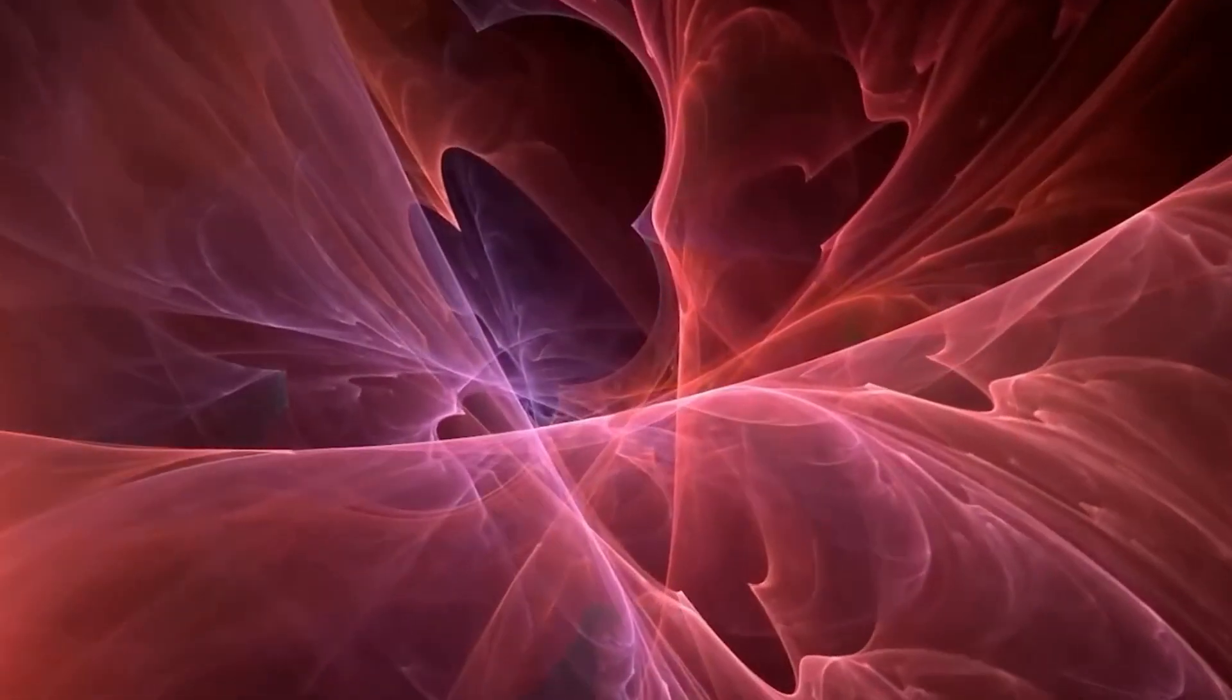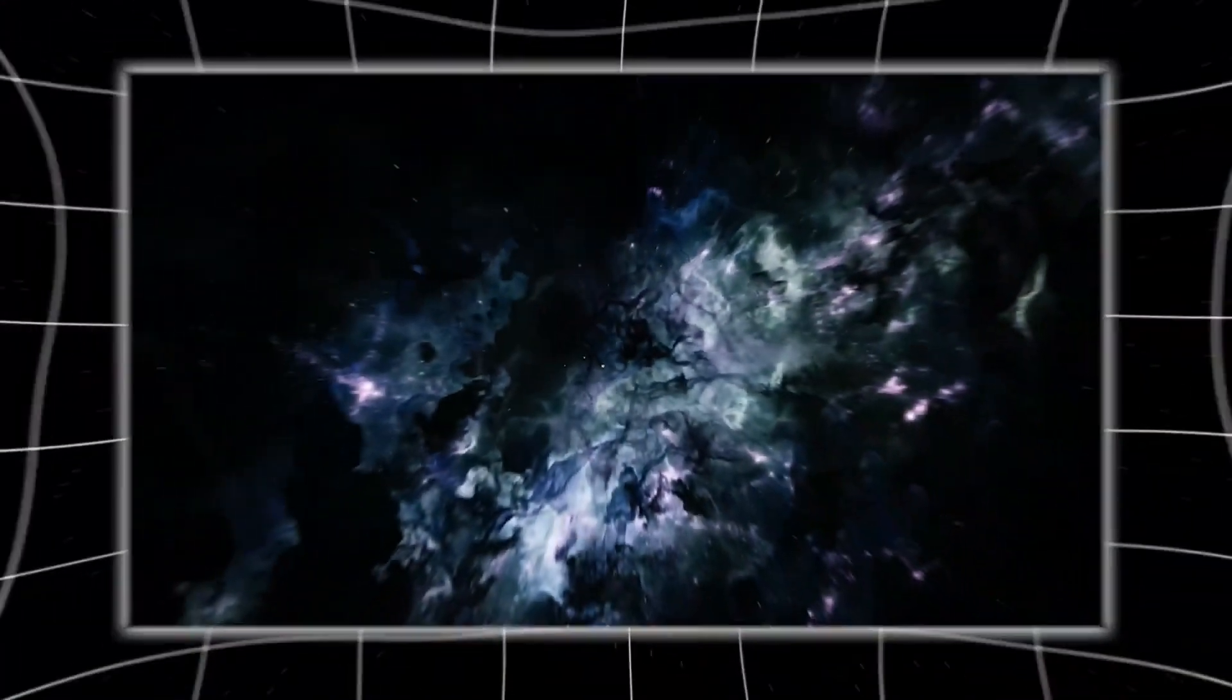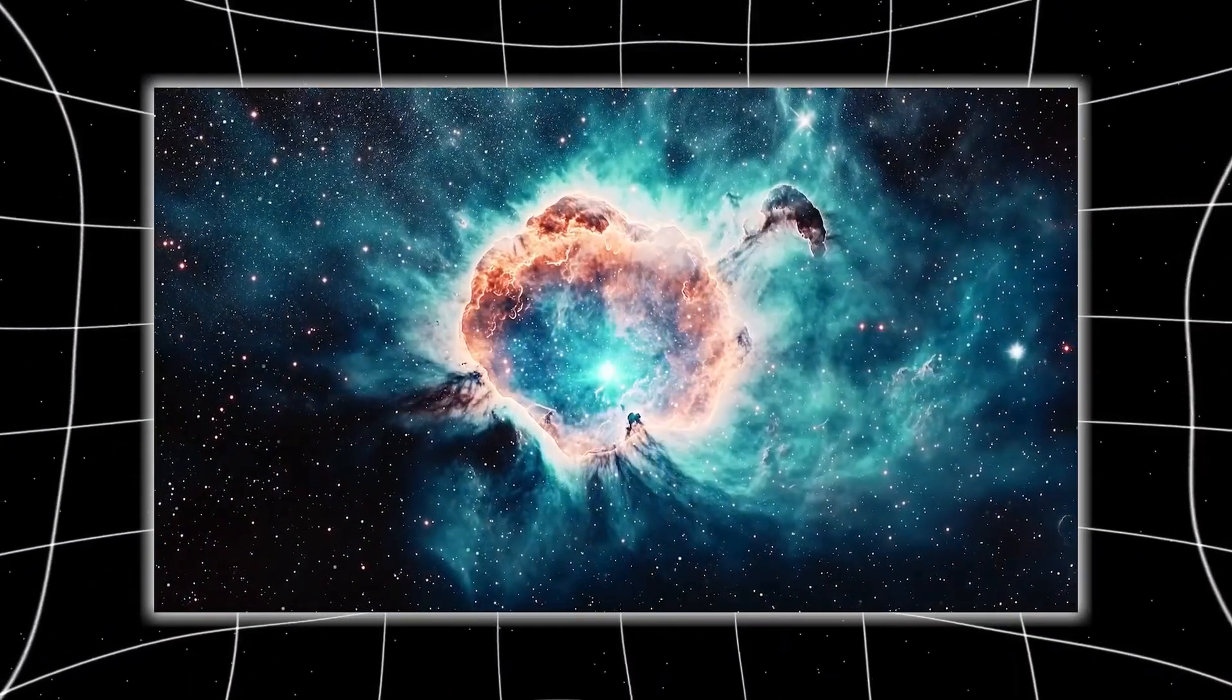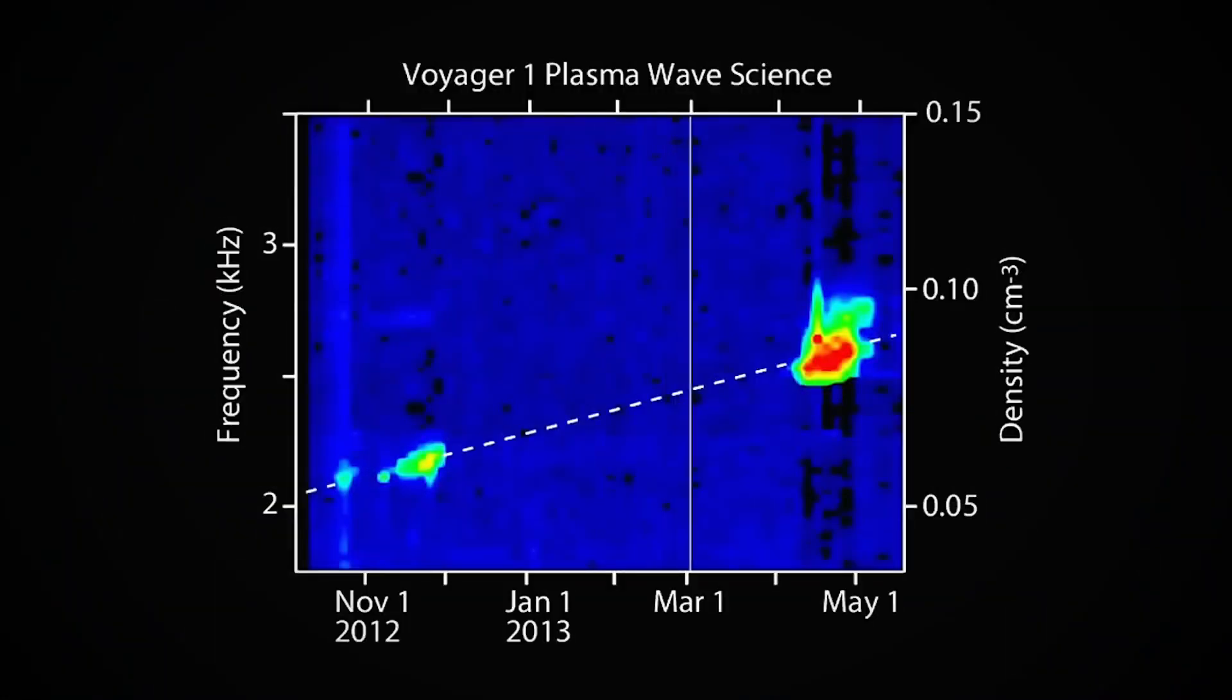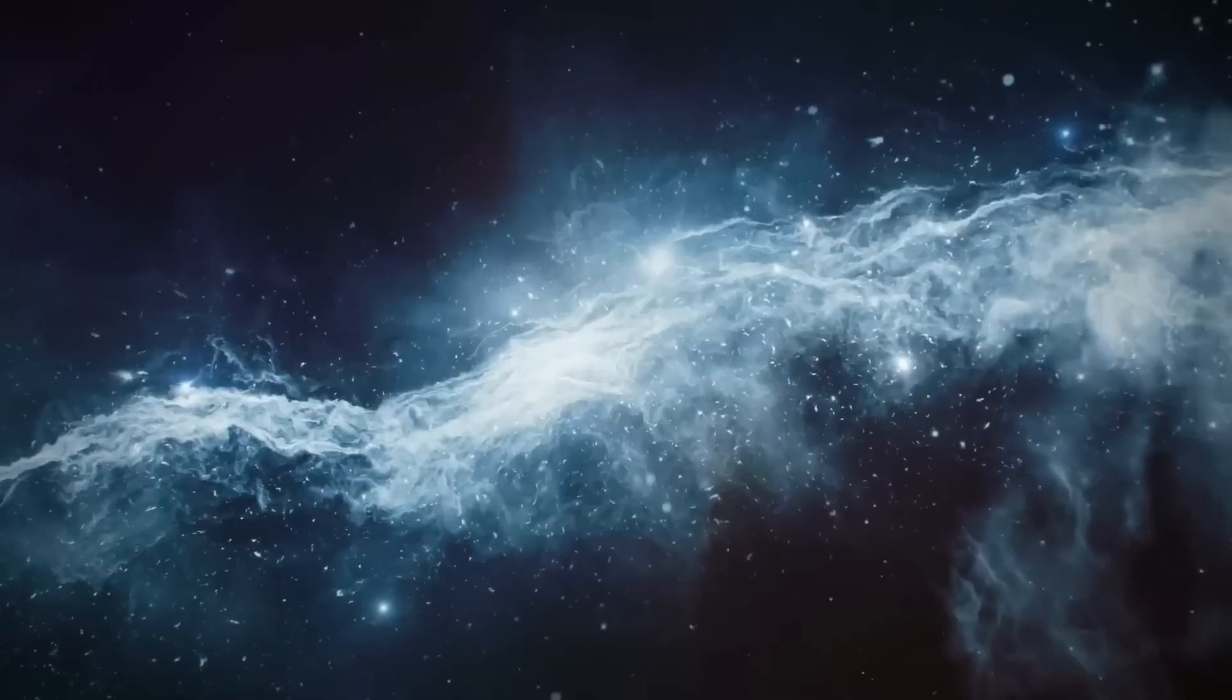We used to believe interstellar space was uniform, a neutral expanse of particles randomly dispersed across millions of light-years. But Voyager 1 is revealing something vastly different, something dynamic. Think of it not as a void, but as an atmosphere, one with pressure zones, eddies, and even storms.